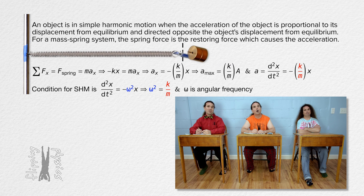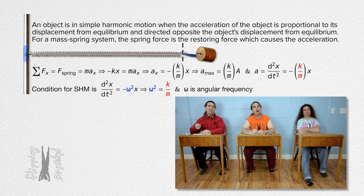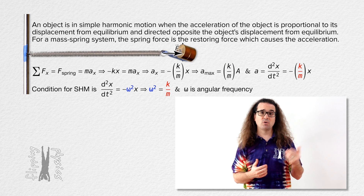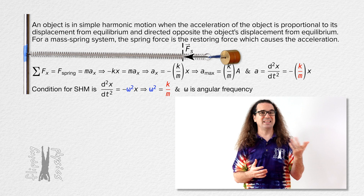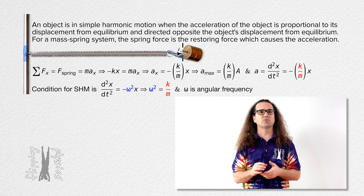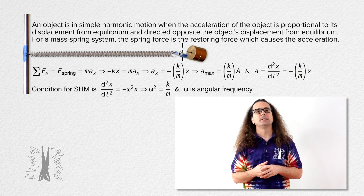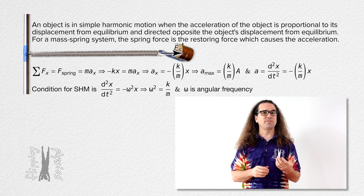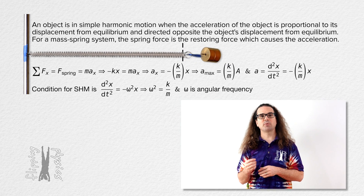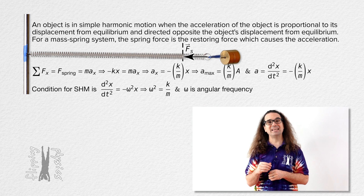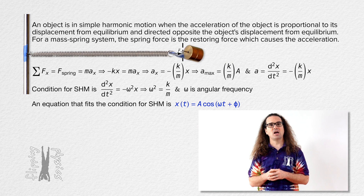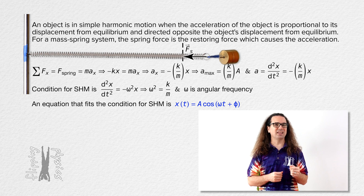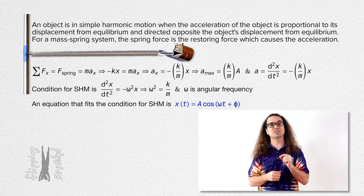Why is the square of angular frequency in the equation and not just angular frequency? That is a fair question — I will show why that is in just a bit; we're not quite there yet. A position equation which satisfies the mathematical definition of simple harmonic motion is position as a function of time equals amplitude times the cosine of the quantity angular frequency times time plus phi, the phase constant.